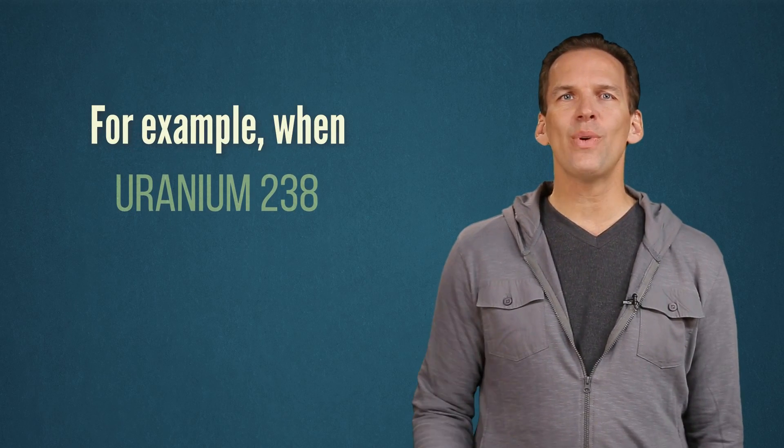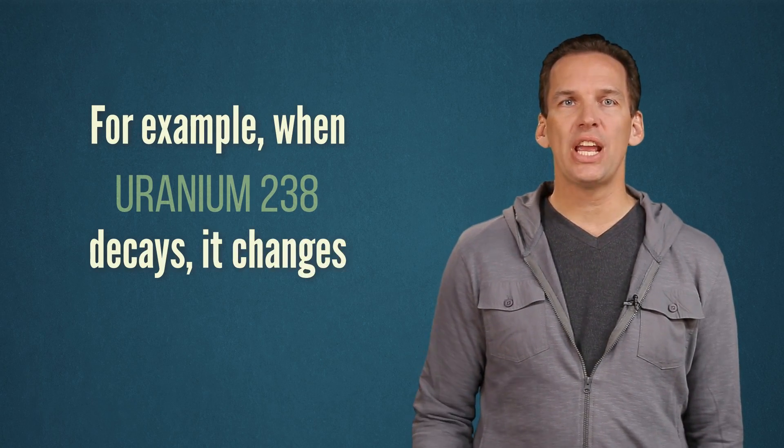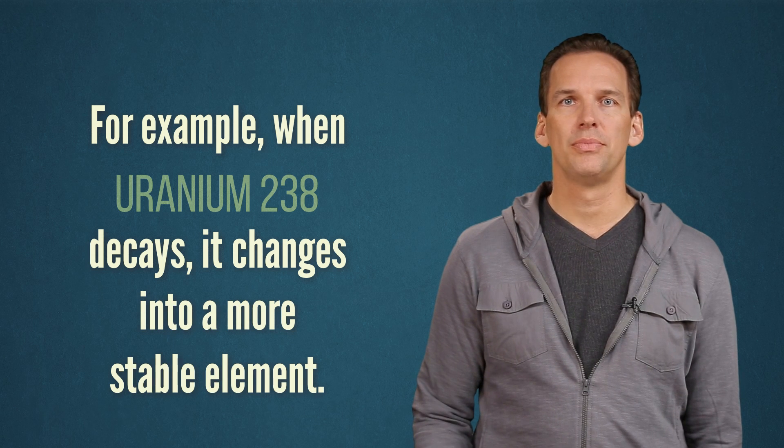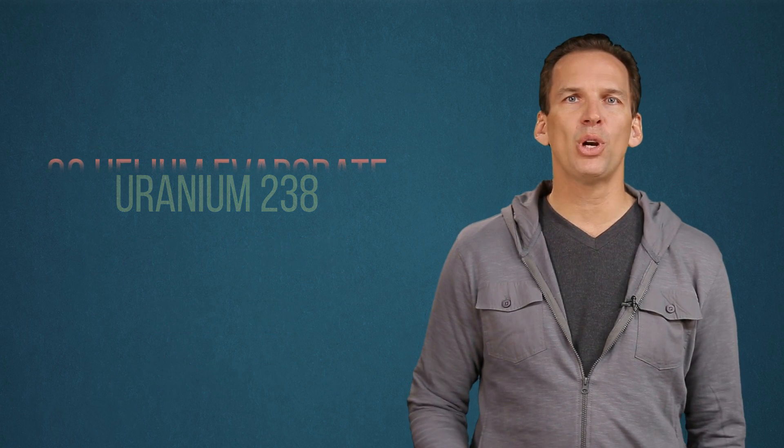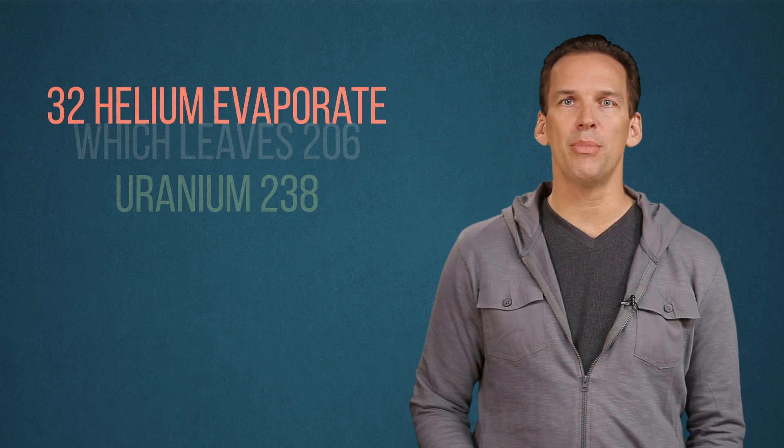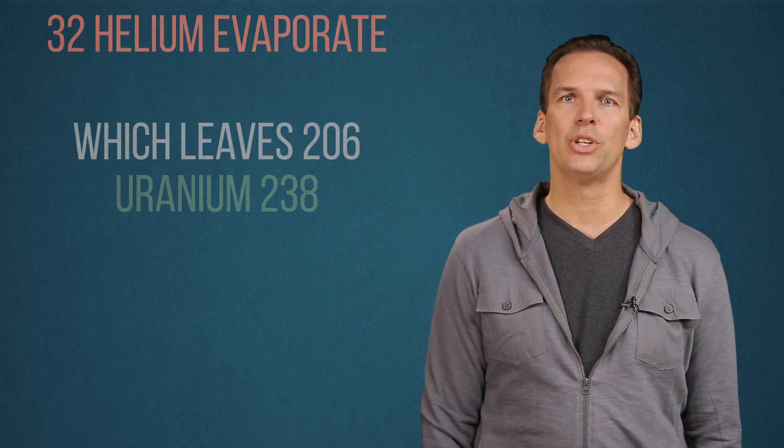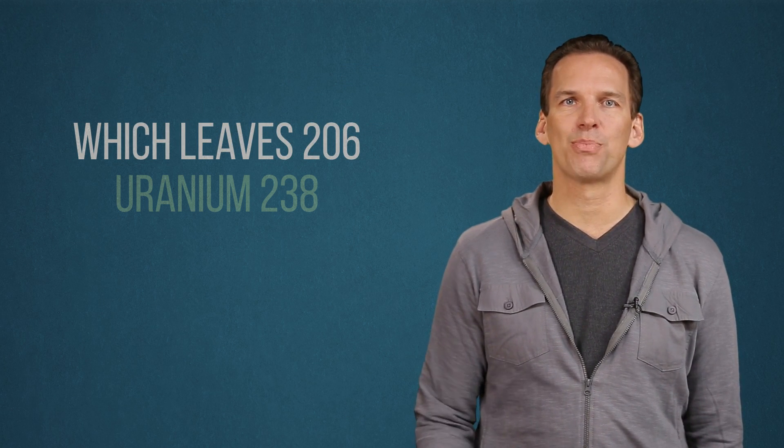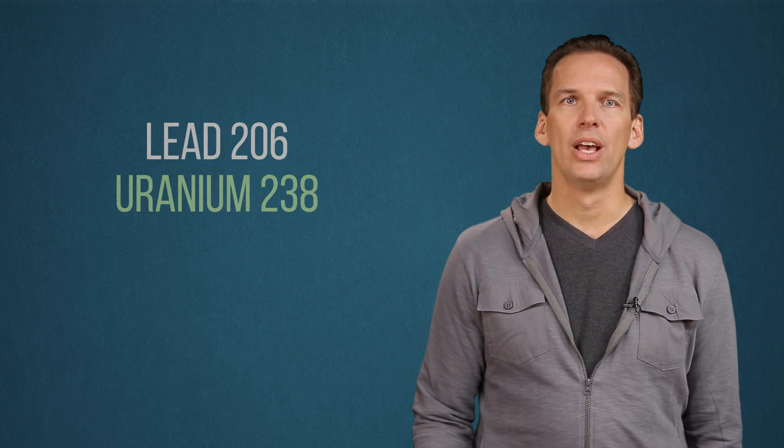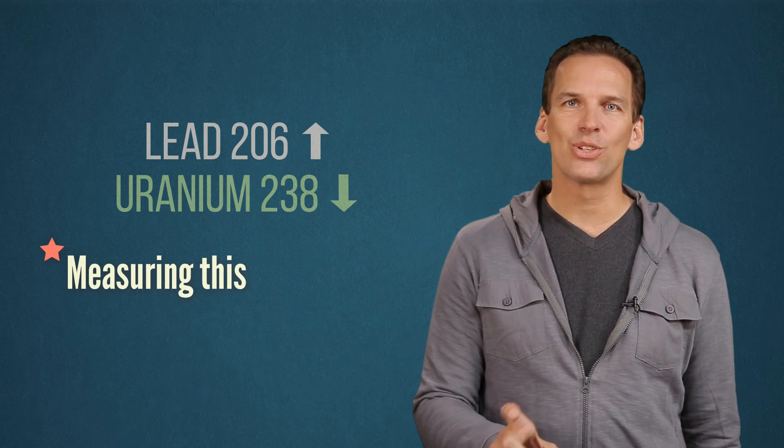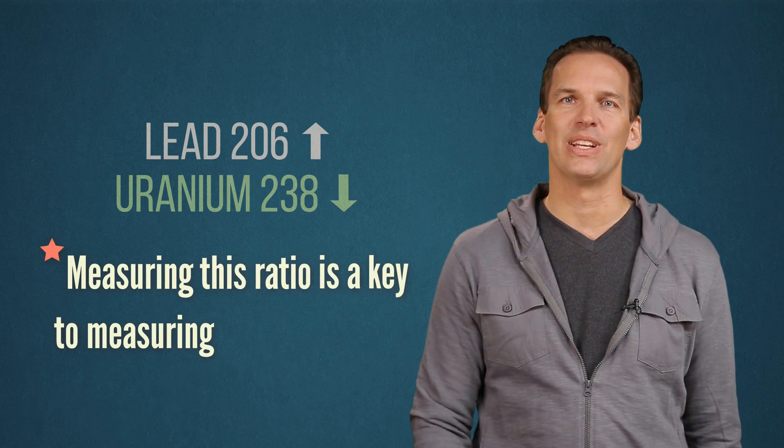For example, when uranium-238 decays, it changes into a more stable element. In the process, 32 protons and neutrons change into helium and evaporate, which leaves 206 remaining. The element with 206 protons and neutrons is lead. So the amount of lead atoms increases as the amount of uranium decreases. Measuring this ratio is key to measuring the object's age.